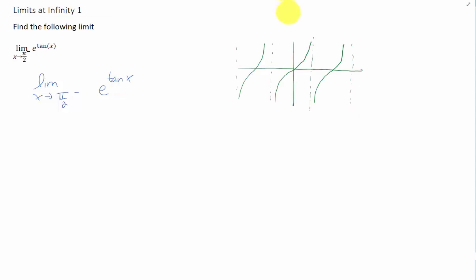Well, the graph of the tangent of x is a periodic function, but it has asymptotes. It actually has an asymptote at pi over 2 and 3 pi over 2 and negative pi over 2. So what we need to do is take a limit of tangent of x as x approaches pi over 2 from the left first.